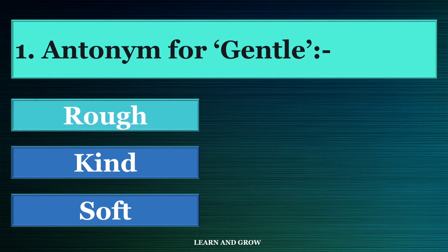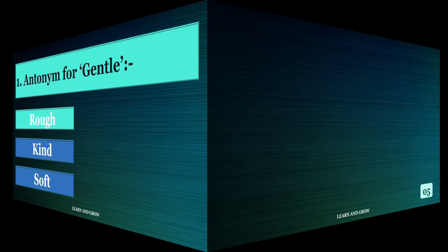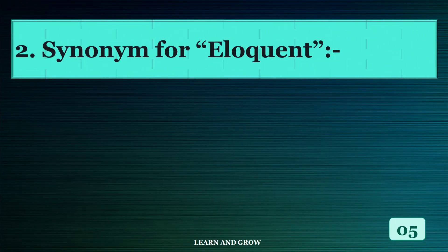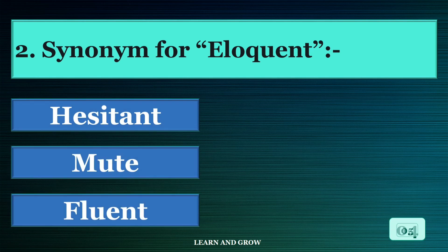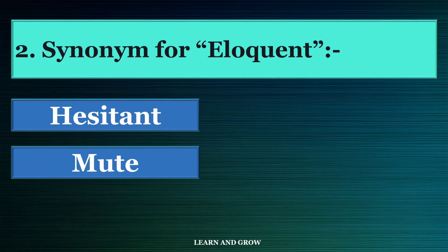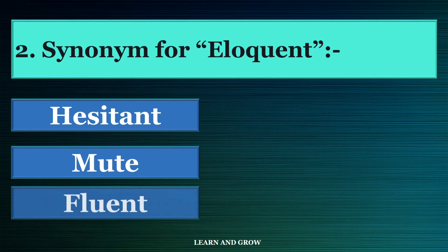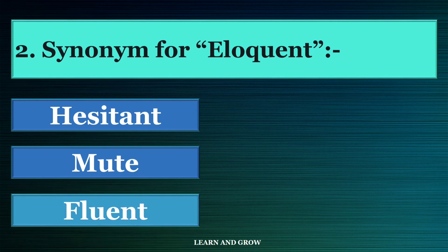What is the synonym for eloquent? Options are: A) hesitant, B) mute, or C) fluent. The right answer is option C, fluent.